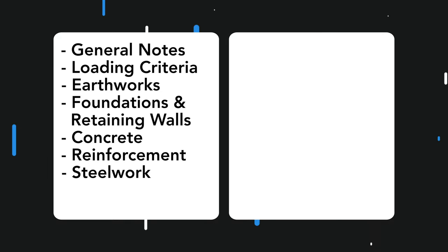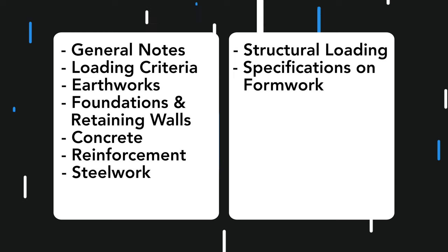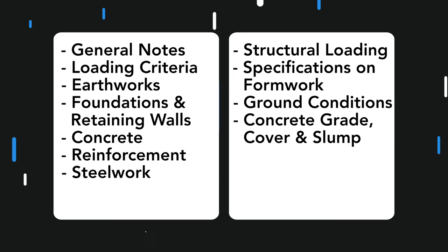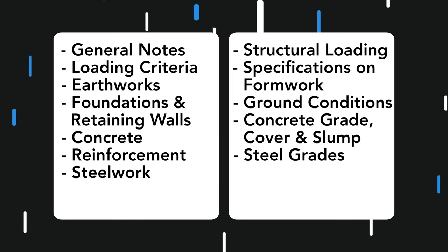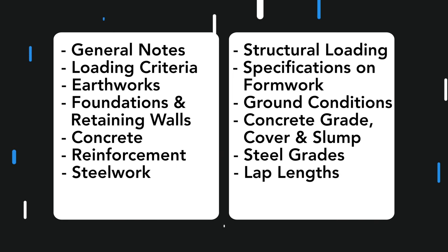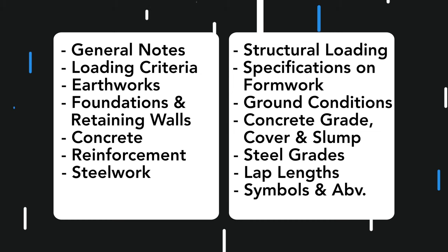Some of the things covered within these parts are structural loading assumptions, specifications for the performance of formwork, ground condition assumptions and requirements, concrete cover, grade and allowable slump, structural steel grades, standard lap lengths of steel reinforcement bars, and reinforcement symbols and abbreviations.